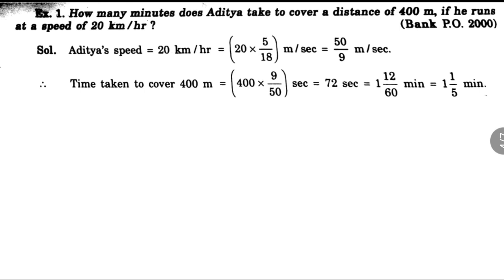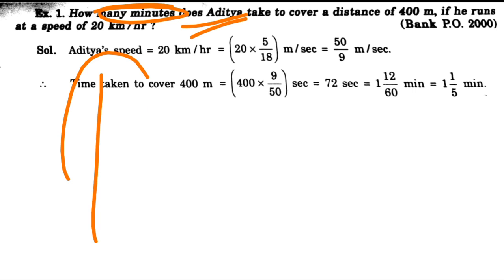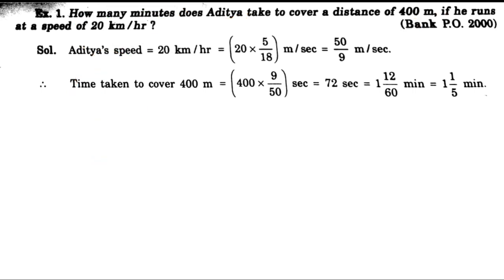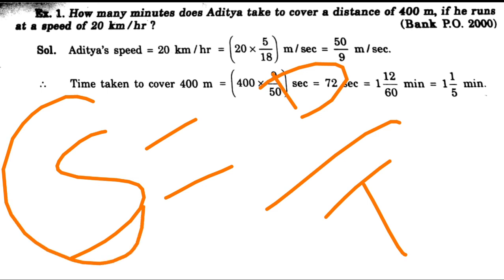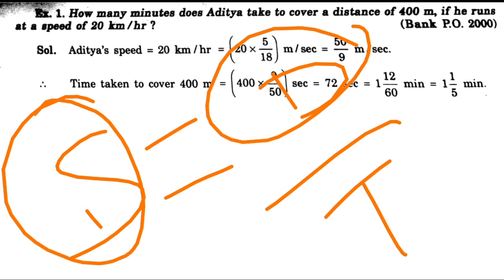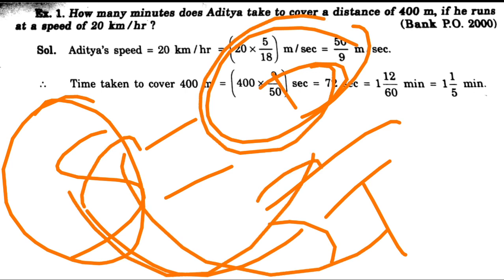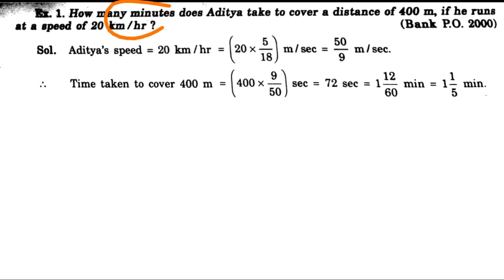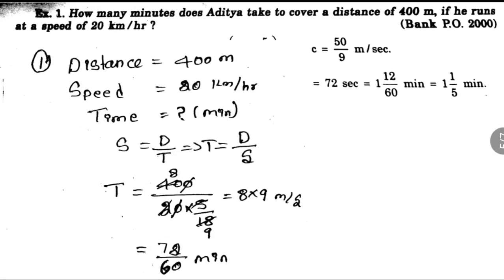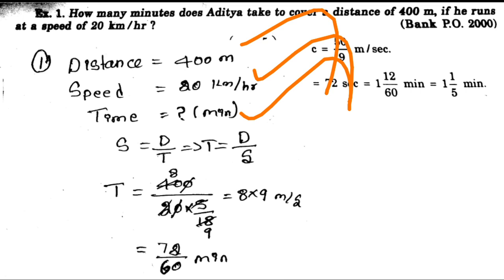First question: how many minutes does it take to cover a distance? How many minutes does it take? The distance is 400 meters. So we use this distance and time. Use the speed and the distance. The distance is 400, speed is 20 km, so time can be found. Speed is distance by time — that is the formula.